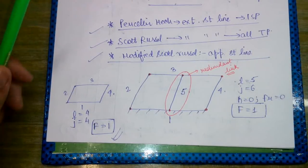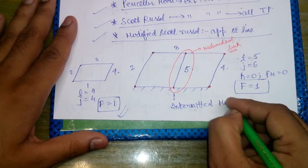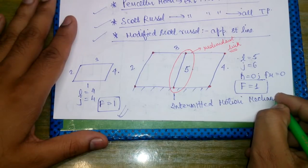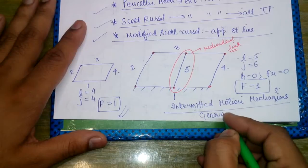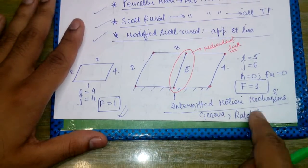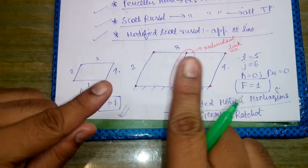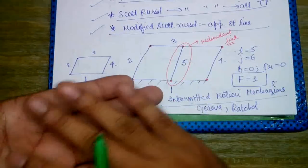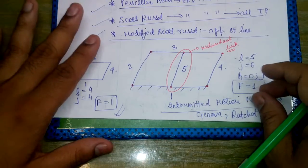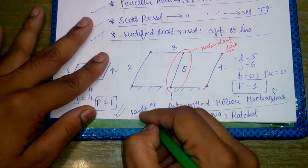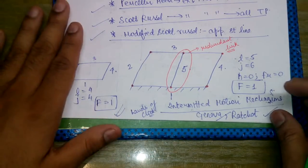The last portion of this chapter covers intermittent motion mechanisms. There are certain mechanisms known as intermittent motion mechanisms — these are the Geneva mechanism and the ratchet mechanism. Intermittent motion means motion that is repeated after a set interval of time with breaks, or it can be called constant motion with breaks. For example, the hands of a clock are an example of an intermittent motion mechanism.